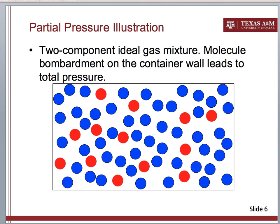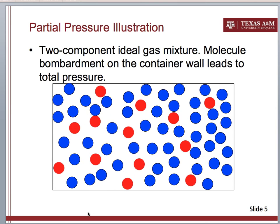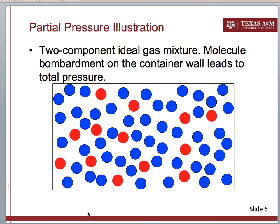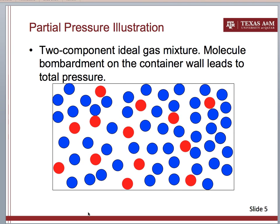Here I use blue and red spheres to represent the two types of molecules. The total pressure that we can measure — exerted on the container wall — is due to the bombardment of both the red and the blue molecules. The bombardment of blue and red molecules causes the total pressure exerted on the inside of the container wall. That's the concept of total pressure.